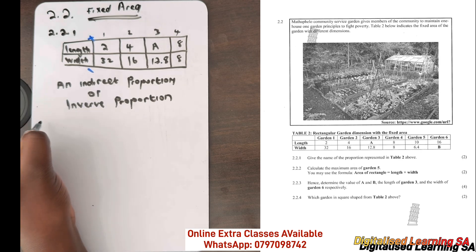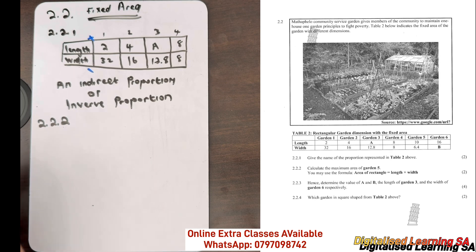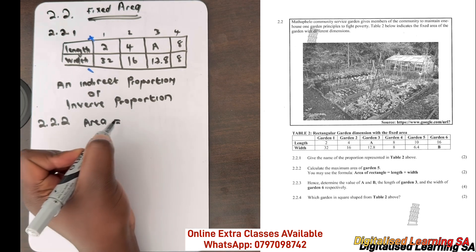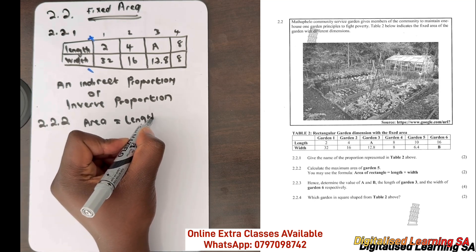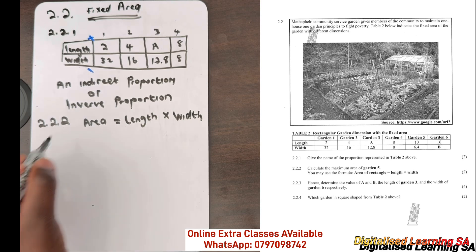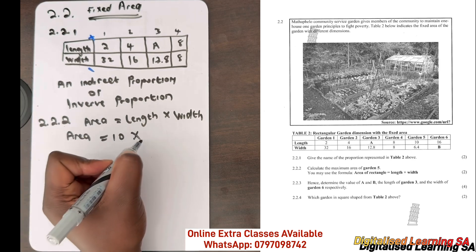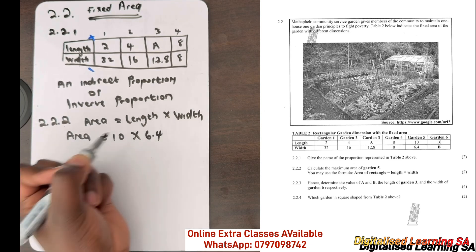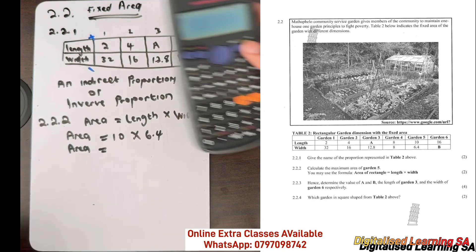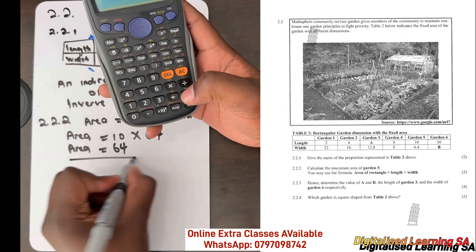Now let's move to question 2.2.2, which says: calculate the maximum area of garden 5. You may use the formula: Area = Length × Width. We are looking for the area of garden 5. Our area equals the length for garden 5 which is 10, multiplied by the width which is 6.4. So the area equals 10 × 6.4, which gives us 64. Our area will be 64.